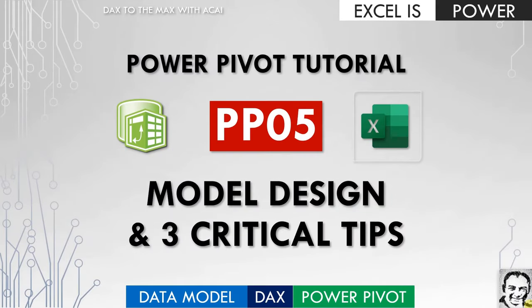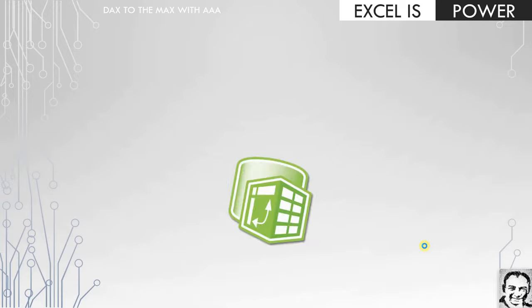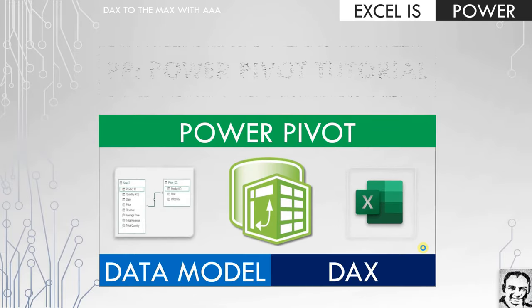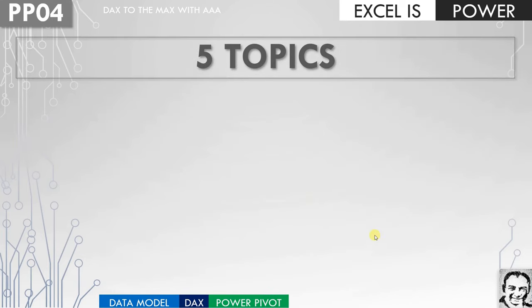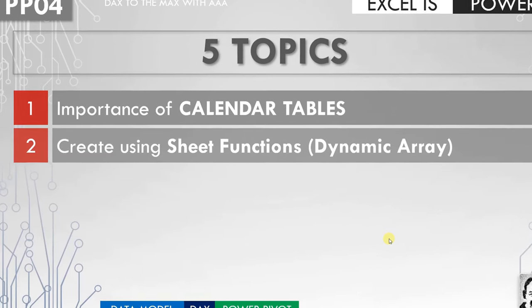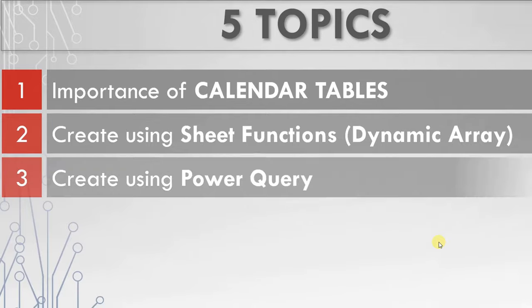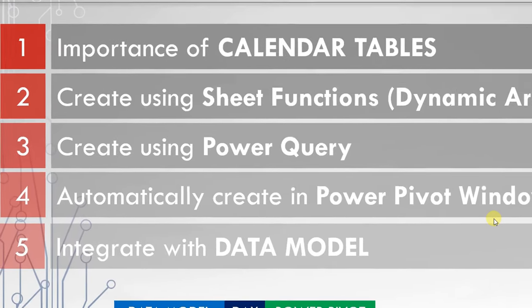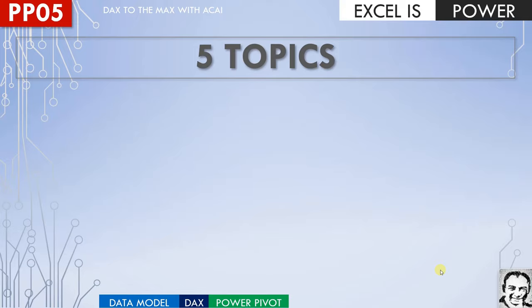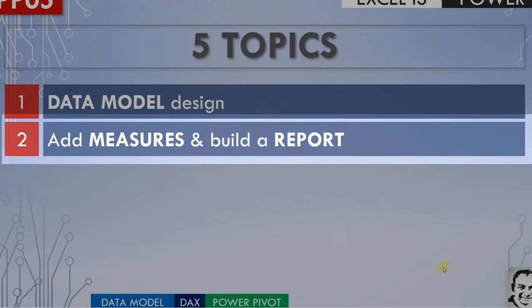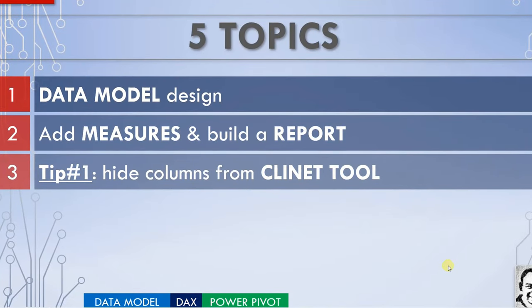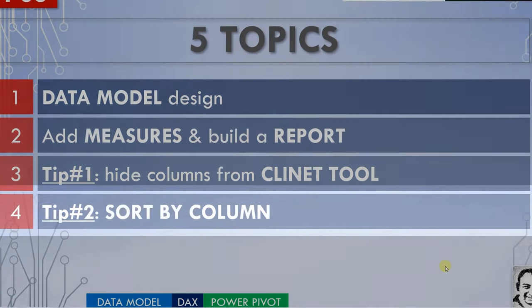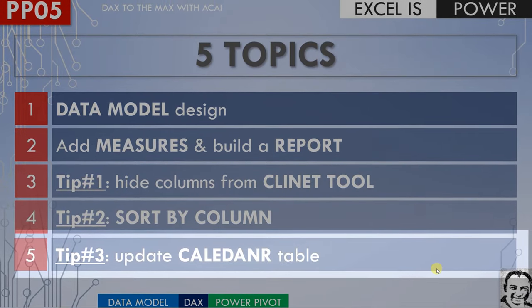In this video, we are going to discuss data model design and present three critical tips you should know while designing your model. In the previous video PP04, we discussed calendar tables and saw three different ways to create one — using dynamic array functions, using Power Query, and automatically inside the Power Pivot window — and also how to integrate calendar tables inside data models. In this video PP05, we are going to discuss five topics: how to design a data model, how to add measures and build a report, and three critical tips around designing data models — how to hide columns from client tool, how to sort by column, and how to update calendar tables.